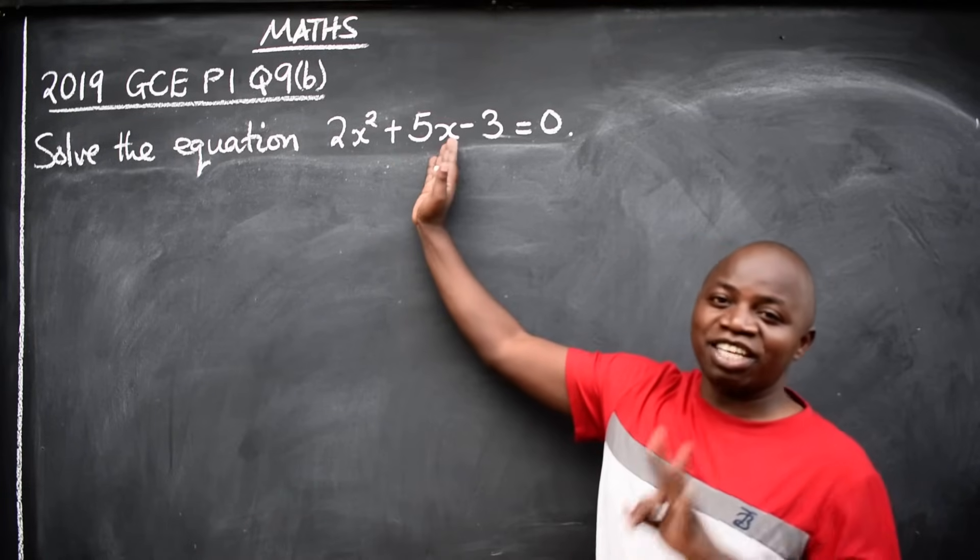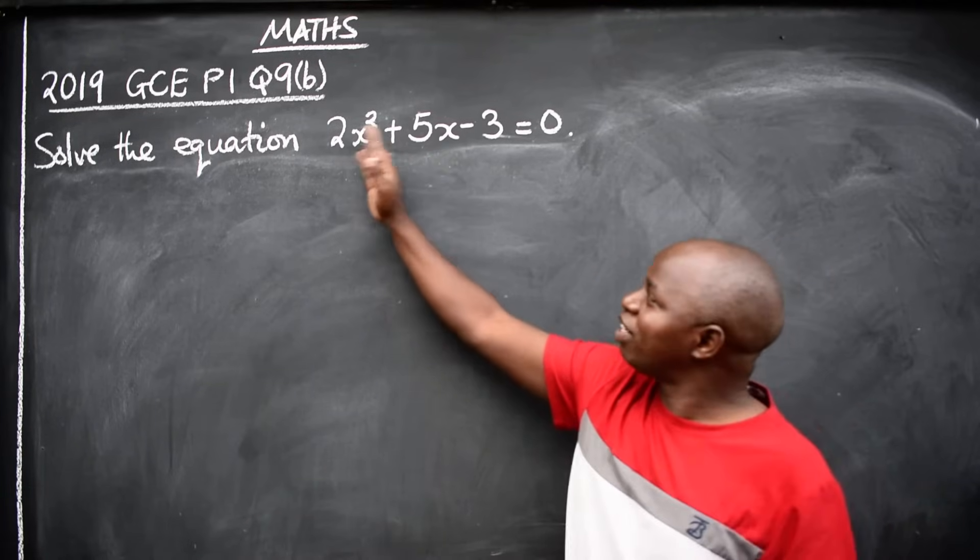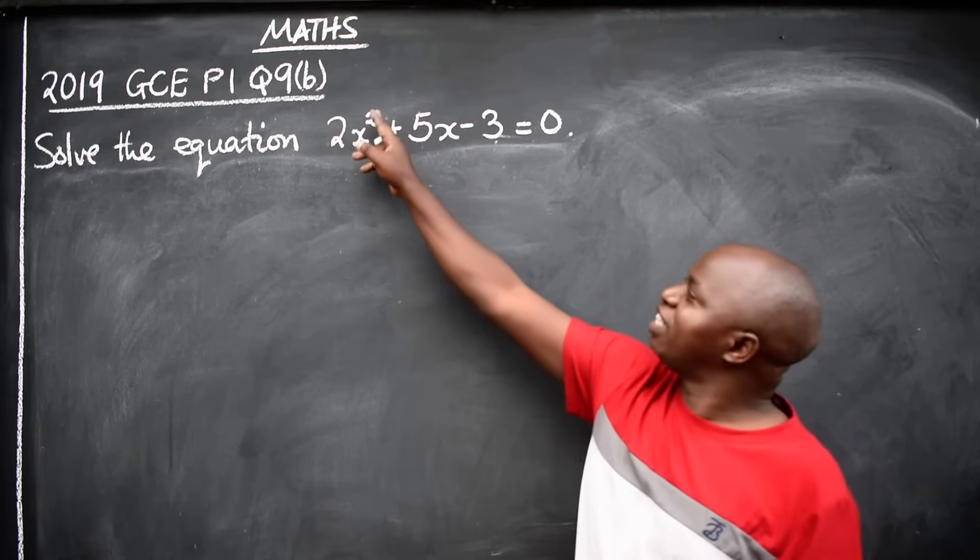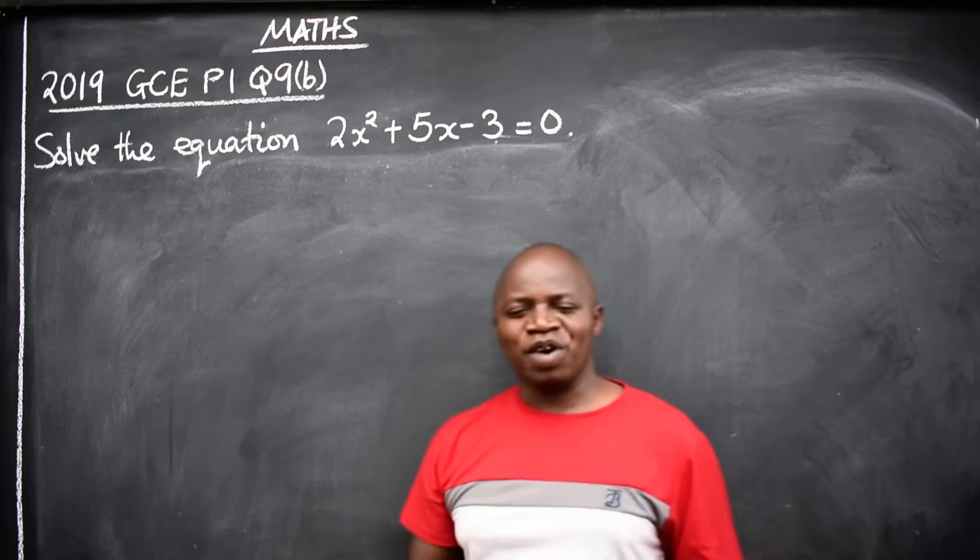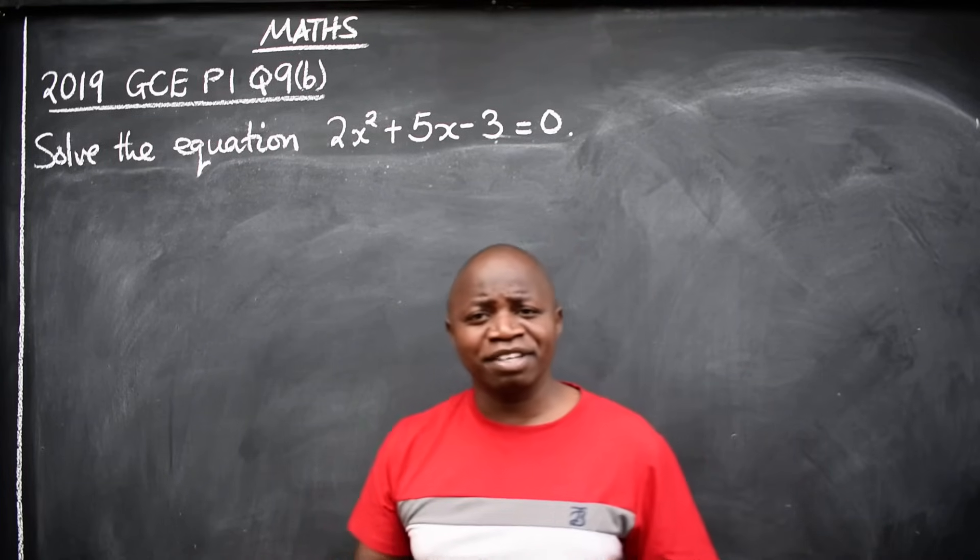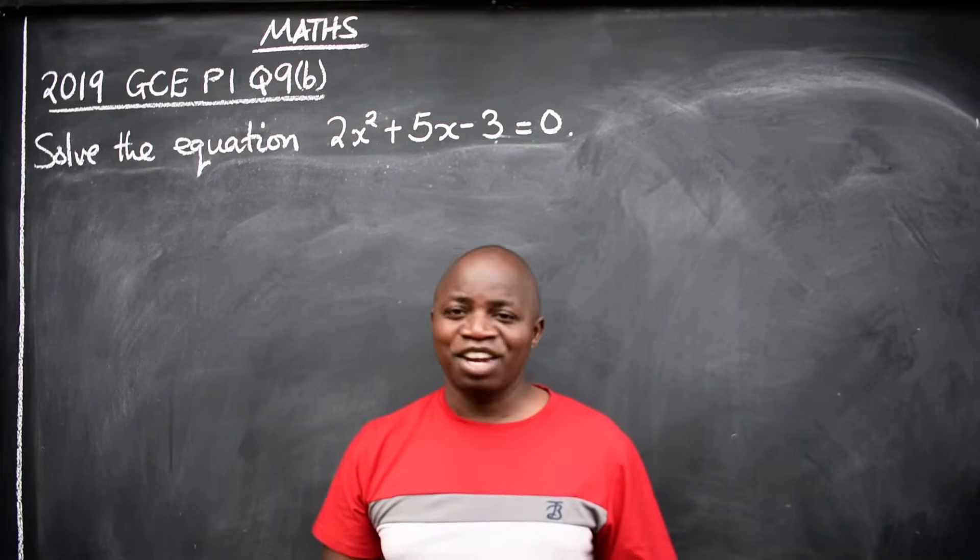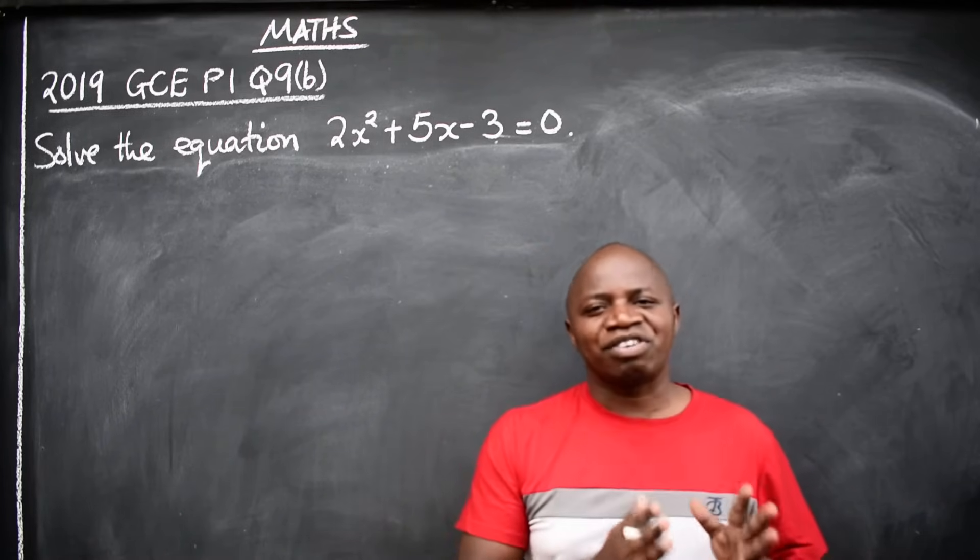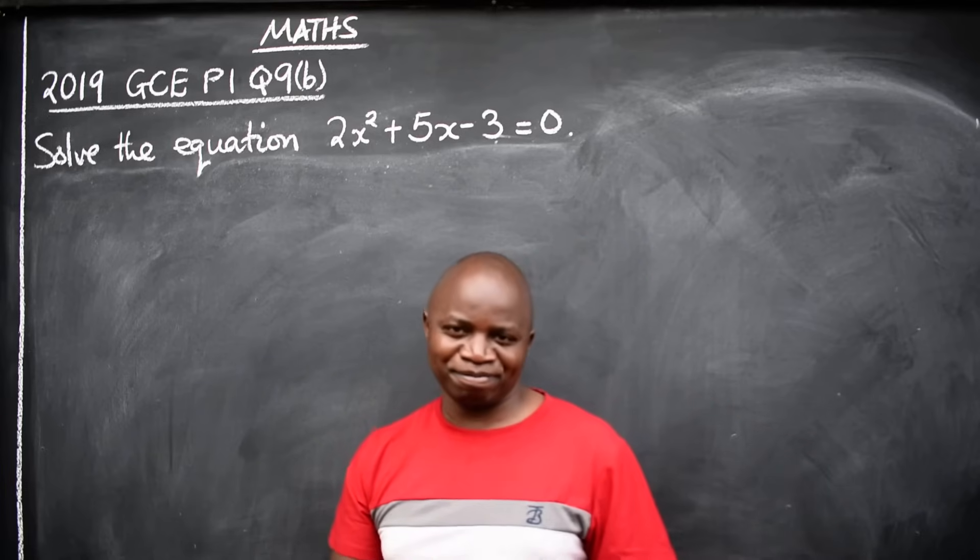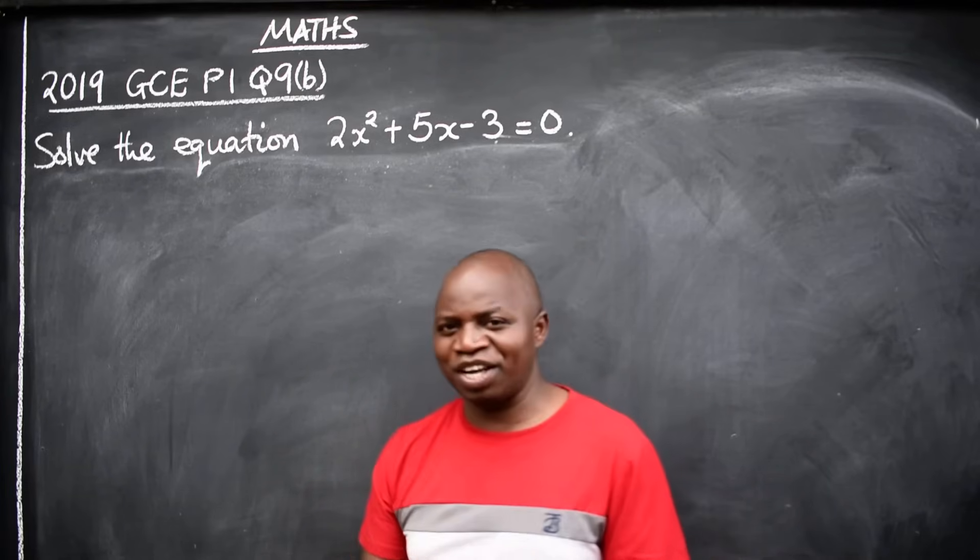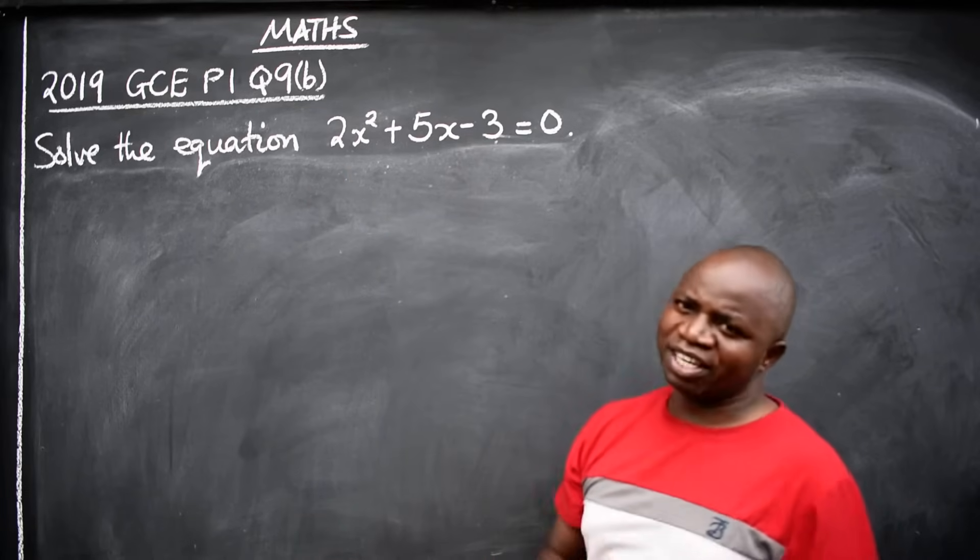A type of equation that has got three terms with the highest power or degree as a square. What type of equation is that? Could it be cubic equation? No. This is what we call quadratic equation.